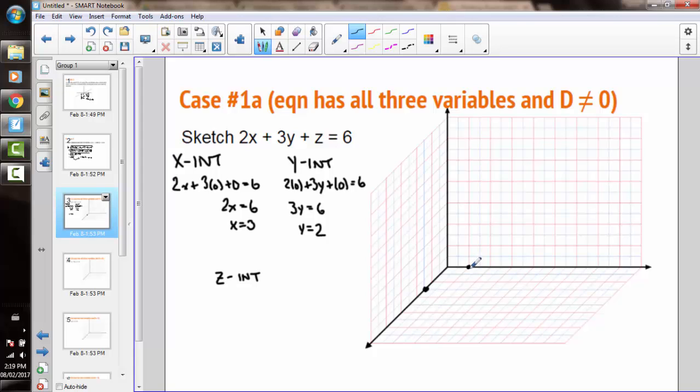We'll plot that point. Finally, the z-intercept happens when x is 0, and y is 0. So our z-intercept in this question is 6. Plot that point. And now, with a nice straight line, we're just going to connect these three points.